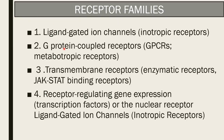The first is the ligand-gated ion channel, second is the G-protein coupled receptor, third is the transmembranous receptor, and fourth is the receptor that regulates gene expression. The first three are membrane-attached receptors and the fourth one is the receptor present in the nucleus.